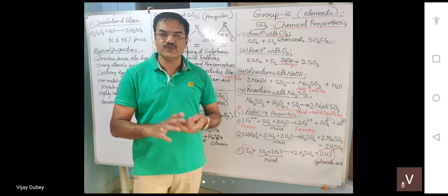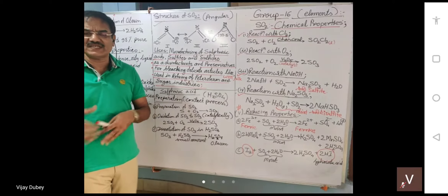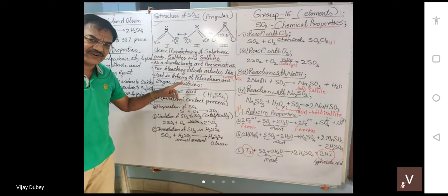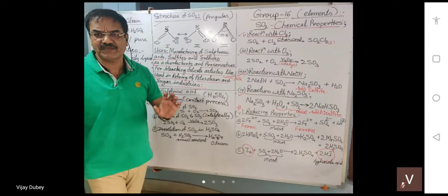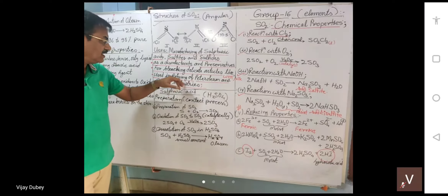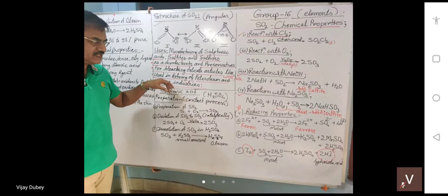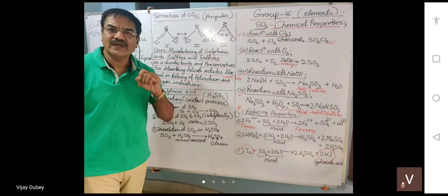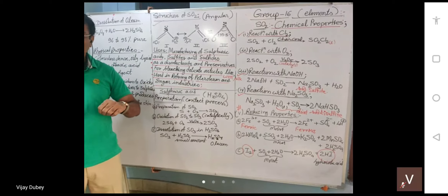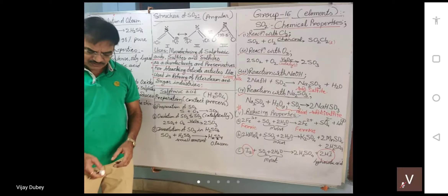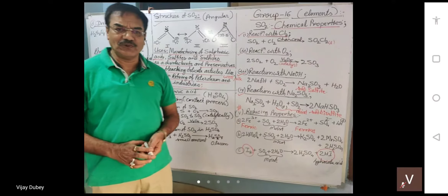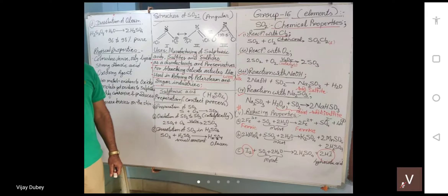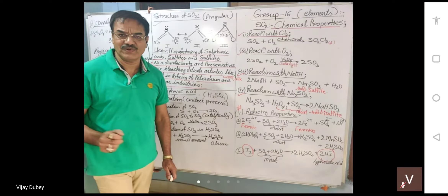The refined sugar we eat is white and crystalline because of SO2 used in its refining. SO2 is converted to SO3, which forms sulfuric acid with water. This is a root cause of problems we see nowadays. The sweets we eat contain refined sugar, and this causes various health issues.